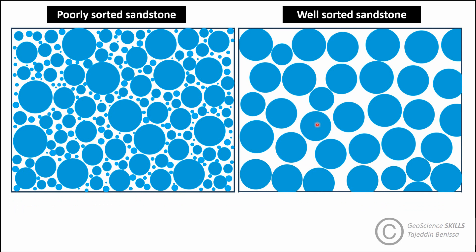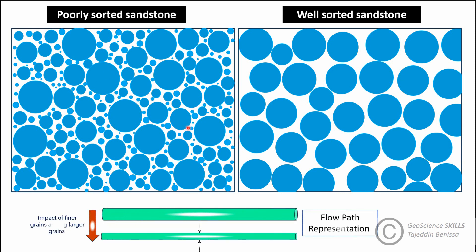Grain sorting is another texture parameter with a direct impact on primary porosity and permeability. In poorly sorted sandstone, porosity and permeability are reduced compared to well-sorted sandstone. This is because finer grains reduce the dimensions of flow paths by narrowing the pore throats, negatively impacting fluid flow through the rock. In well-sorted sandstone, primary or interparticle porosity is preserved since the grains are of similar size. The impact of sorting on porosity and permeability depends on grain size and their relative proportions.